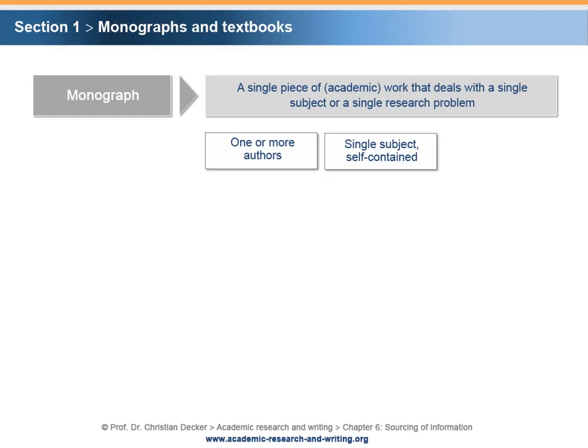In this, it differs from works of literature in which several authors have written on multiple subjects or topics. Therefore, anthologies and encyclopedias are not viewed as monographs. Examples of academic monographs are as follows.